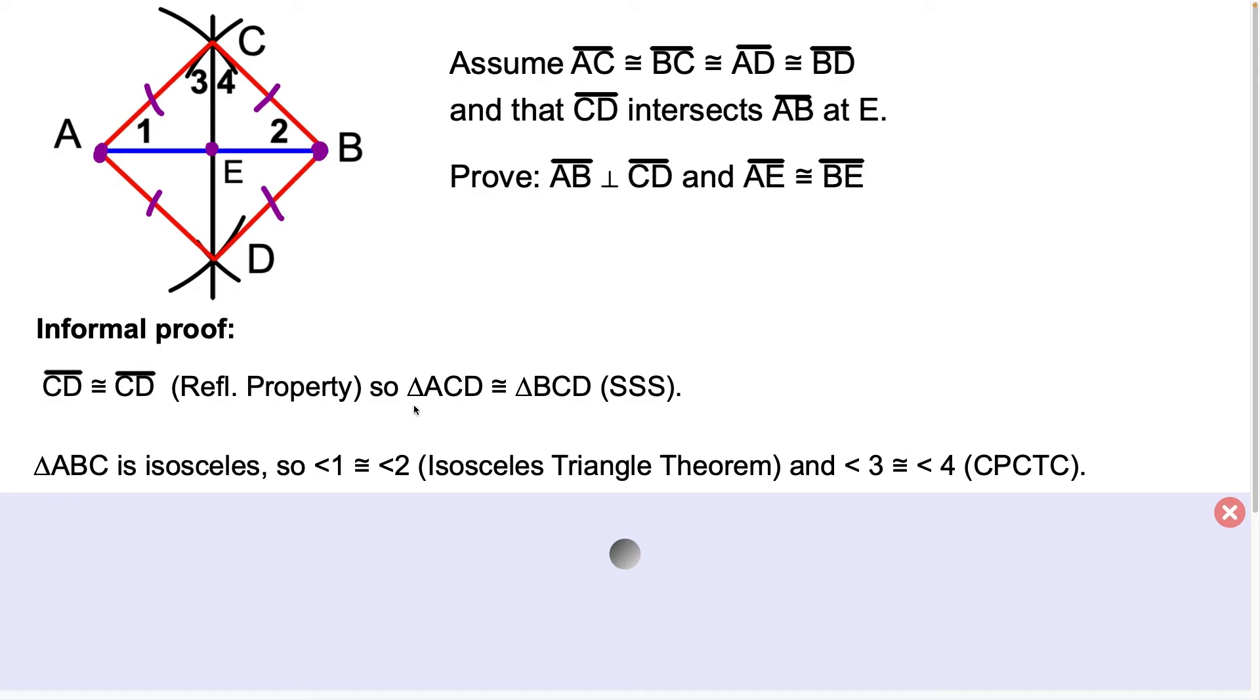And now, remember a moment ago we established that triangle ACD was congruent to triangle BCD, and that'll allow us to say that angle 3 is congruent to angle 4 because corresponding parts of congruent triangles are congruent.